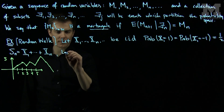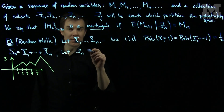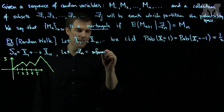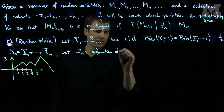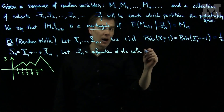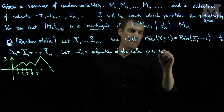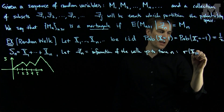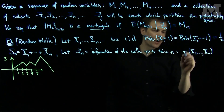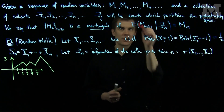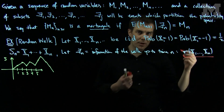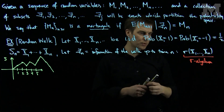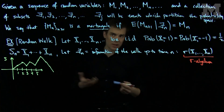We let Fn be the information contained in x1 through xn — the information of the walk up to time n. That's a fancy way of saying it's the collection of subsets generated by x1 through xn. I write sigma here because these collections of subsets, in a more theoretical sense, need to be understood as sigma-algebras. But for now we'll use basic properties of conditional expectation to understand these things.